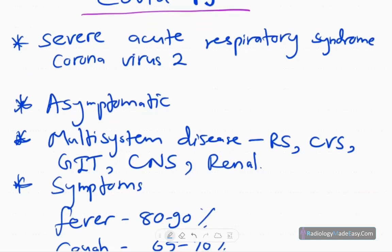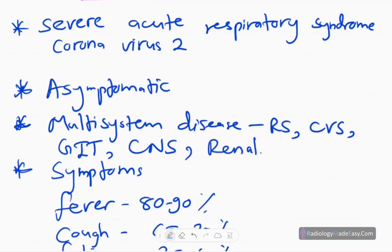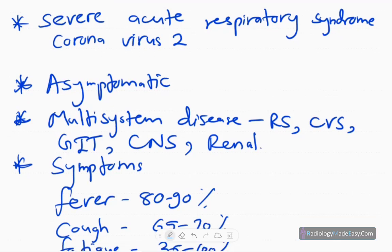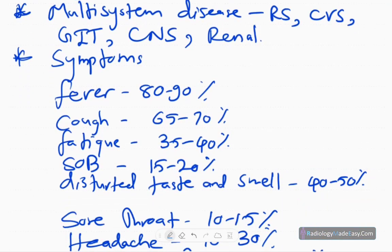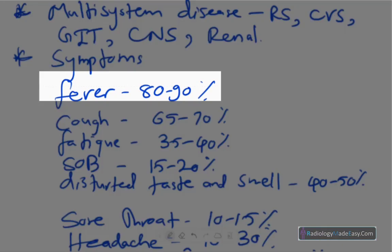Most patients are asymptomatic. Some people develop respiratory symptoms, as well as cardiovascular, gastrointestinal, CNS, and renal problems, making it essentially a multi-system disorder. It mainly affects the respiratory system. Patients can present with fever in 80 to 90 percent of cases, which is the commonest presentation.